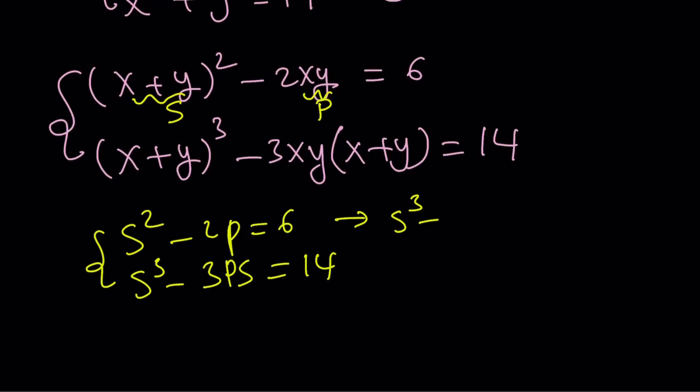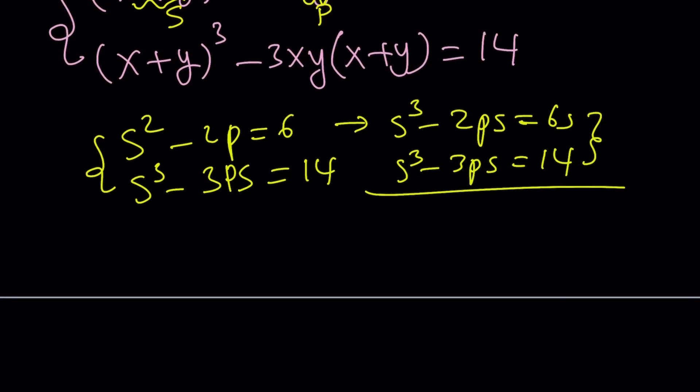And then, subtract these equations. When you subtract these equations, you're going to get ps equals 6s minus 14. And from here, you can isolate p as 6s minus 14 over s.